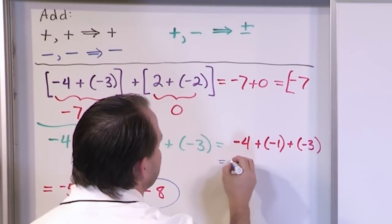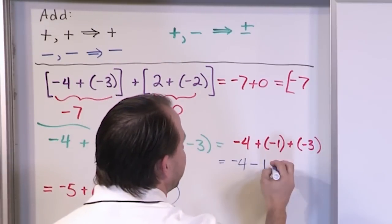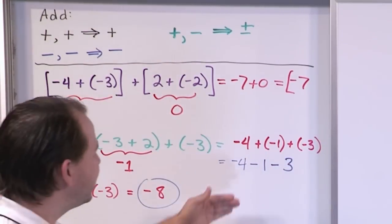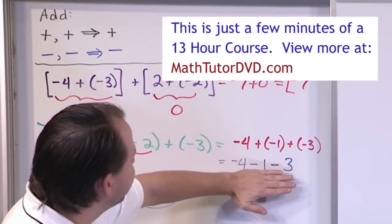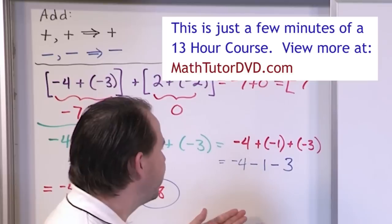You could rewrite this to make it a little clearer to understand what's going on here. Negative 4 plus a negative 1 is the same as negative 4 minus 1. And then this plus a negative 3 is the same as minus 3. So these are the same exact things. There's no difference between what I've written here and what I've written here. It's a different way of writing it on the paper, but it represents the same thing.